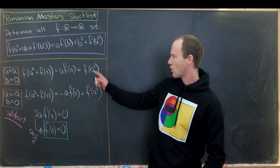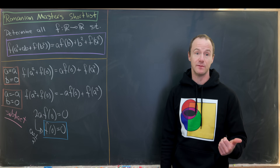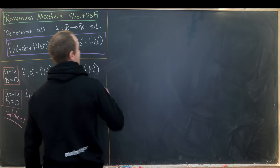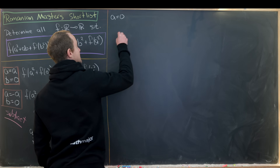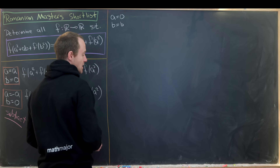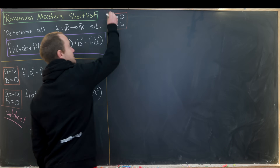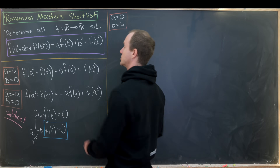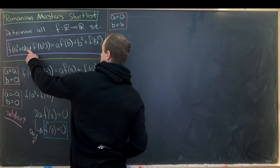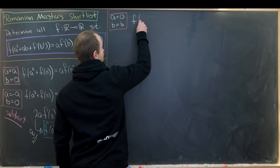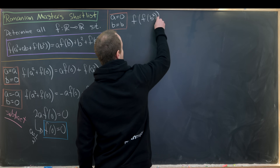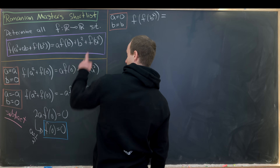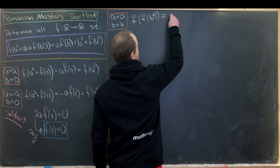Now we'll roll this the other way and take b to be arbitrary, setting a = 0. Plugging into our functional equation gives f(f(b²)) = b², since f(0) = 0 and the other terms simplify.